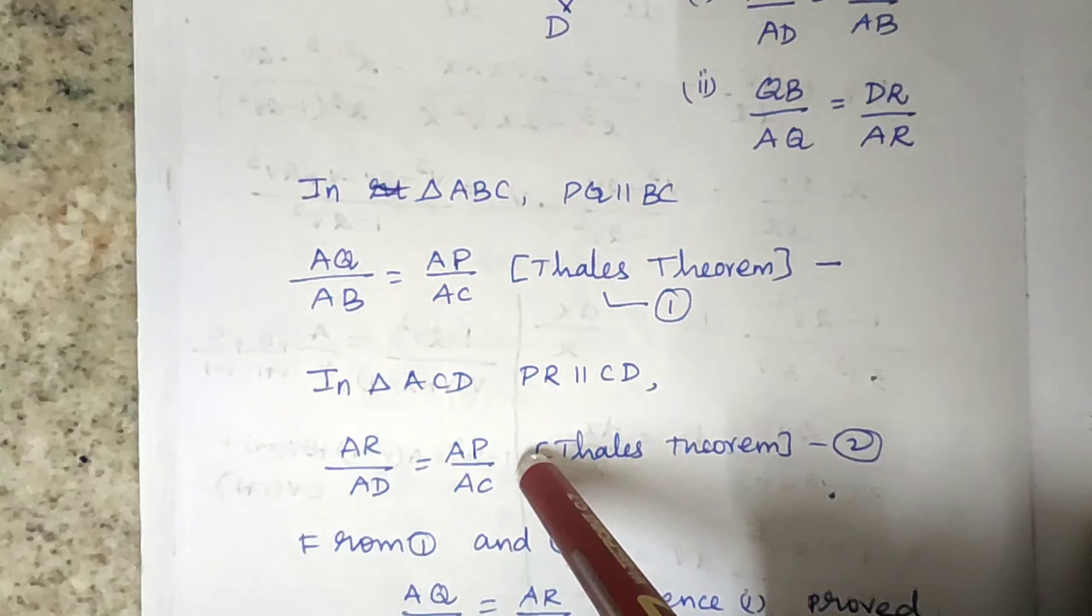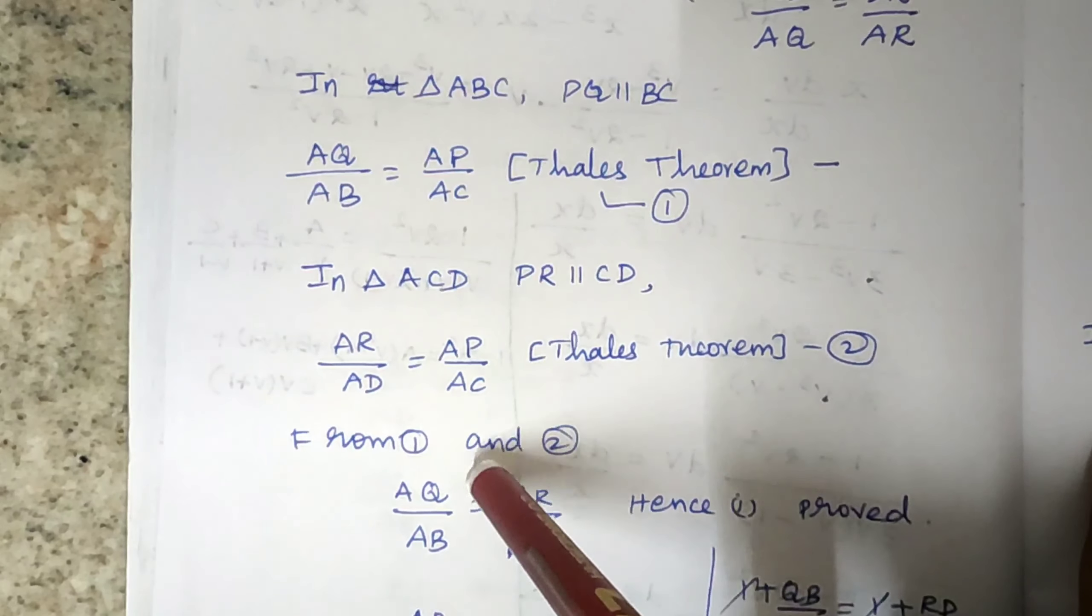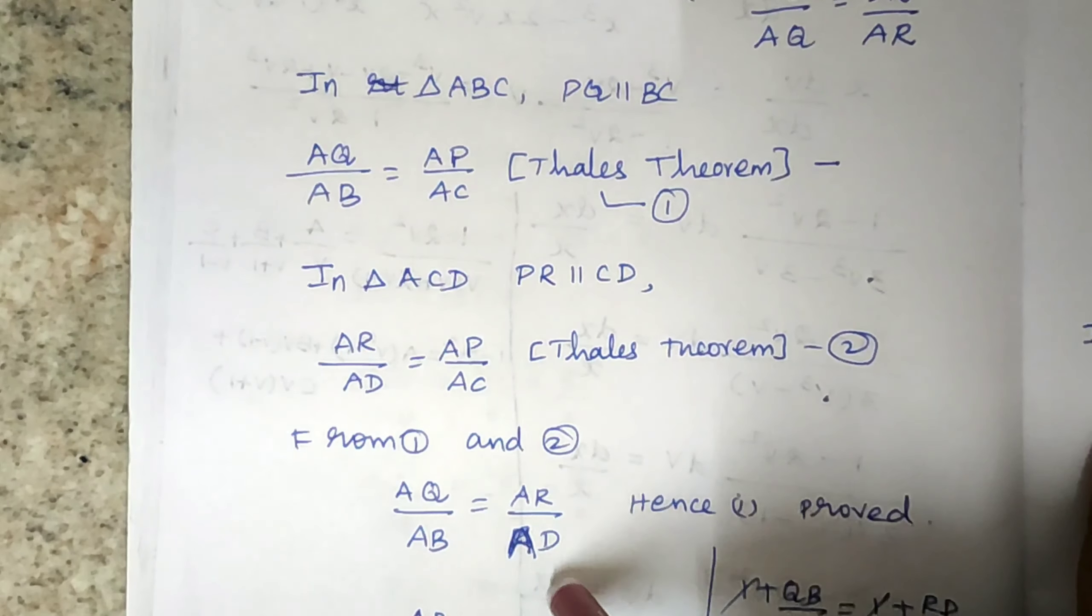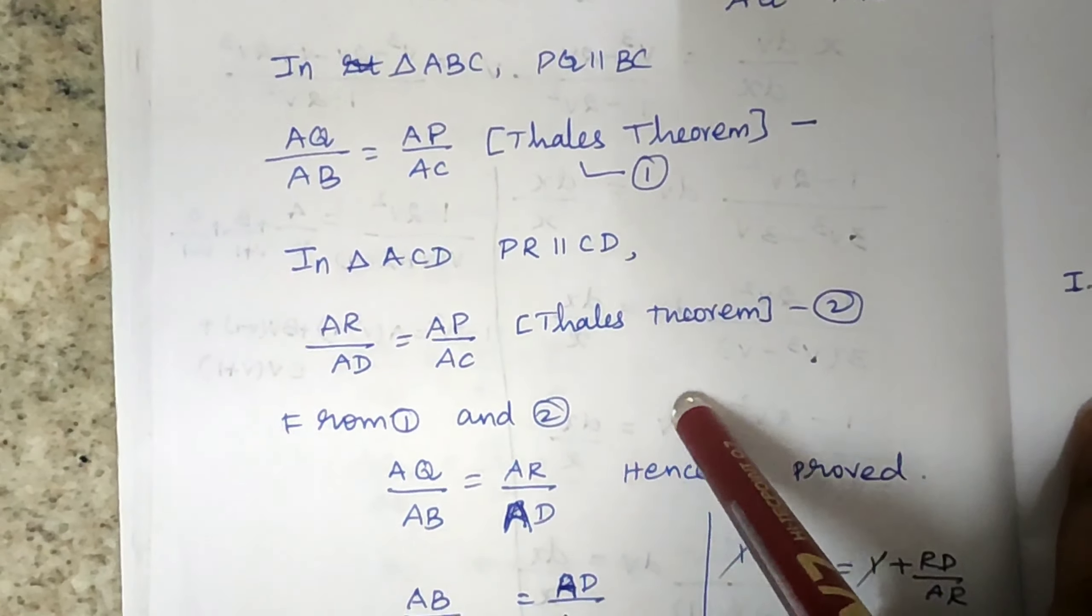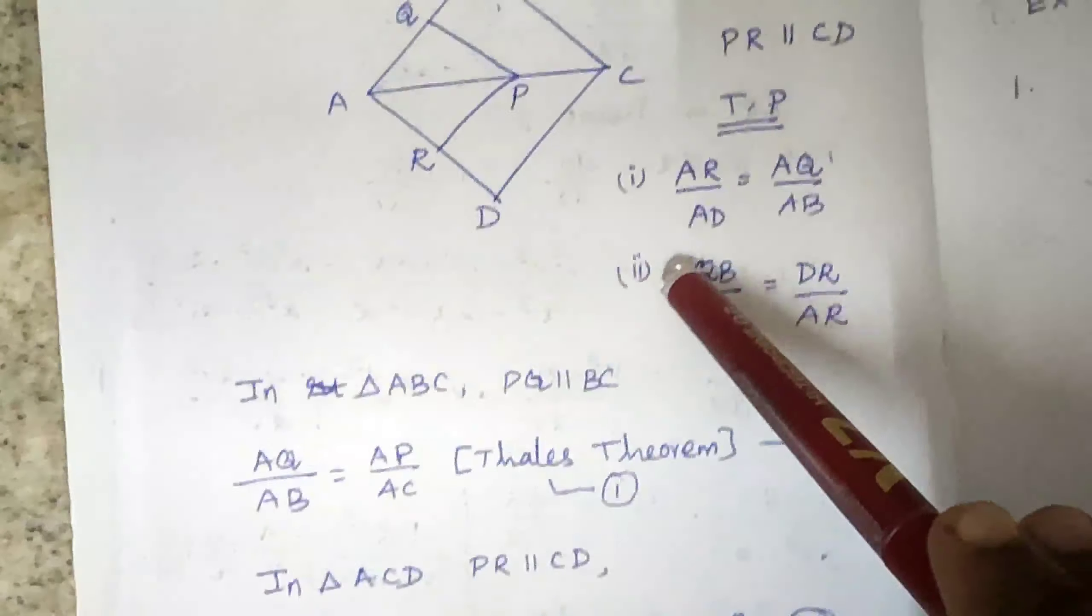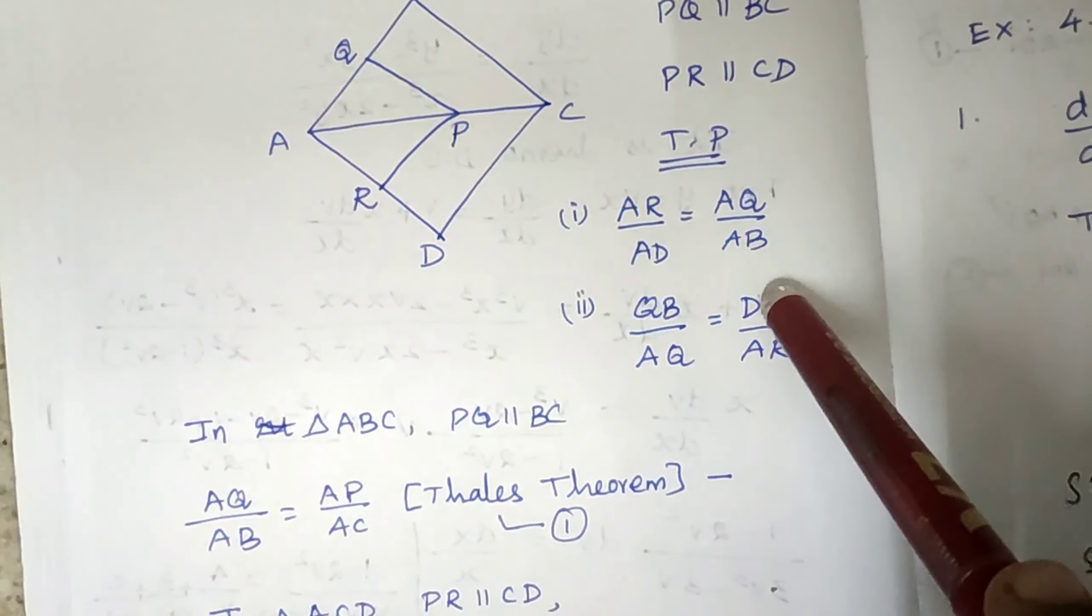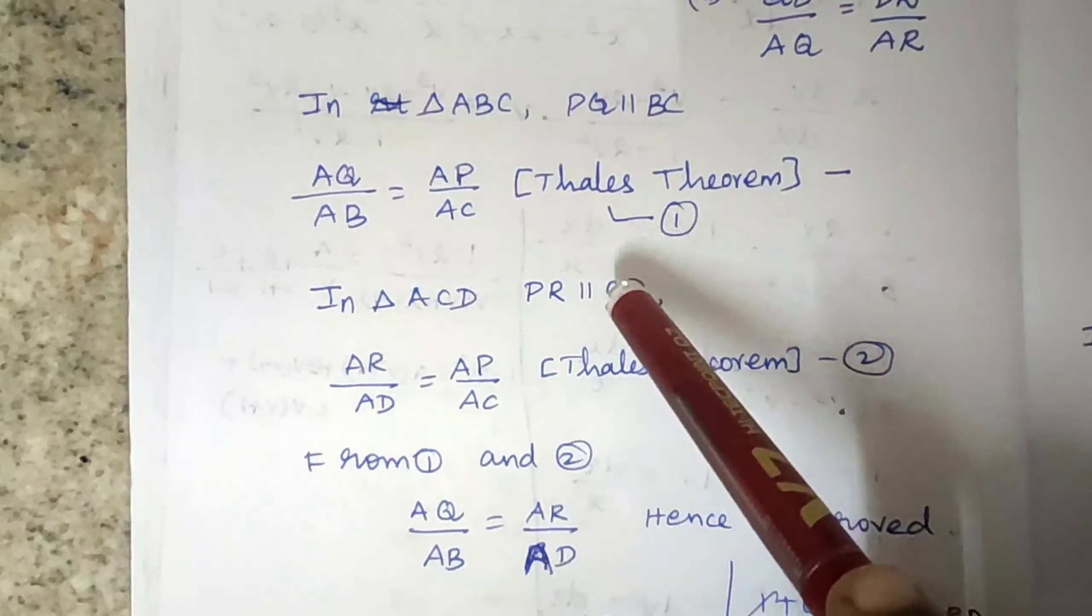From equation 1 and 2, AP by PC is equal. So other sides equal. So AQ by QB equals AR by RD. Hence first subdivision is proved. AR by AD equal to AQ by AB. So just equating here.